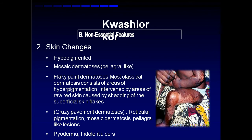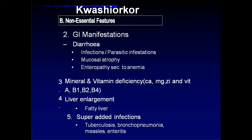GI manifestations include diarrhea due to mucosal atrophy. There are vitamin and mineral deficiencies leading to multiple infections. Vitamin A protects the respiratory and digestive systems, and deficiency of it along with reduced antibodies due to protein deficiency impairs immunity. Parasitic infections can also occur, along with enteropathy secondary to anemia. There is liver enlargement due to fatty liver — since protein is less, the liver tries to produce more lipoproteins, leading to fatty liver.